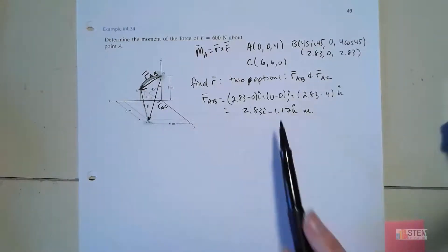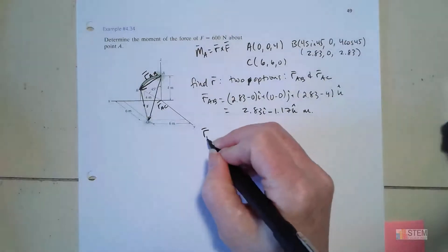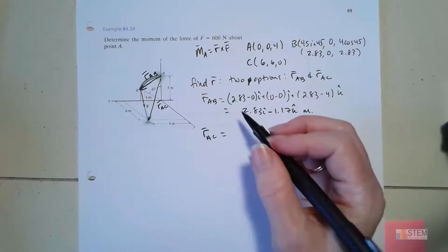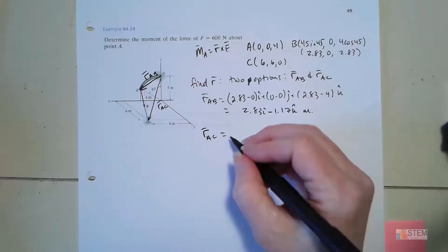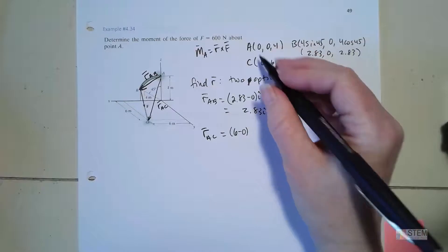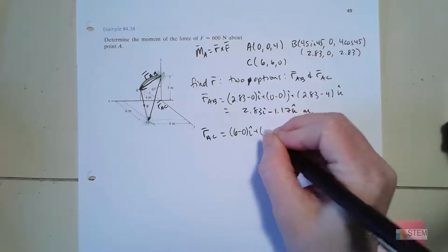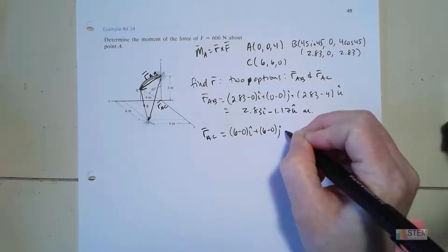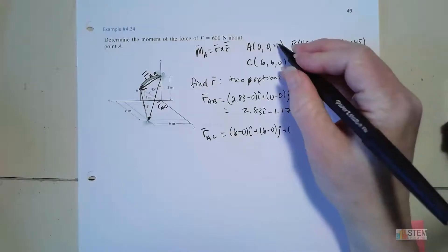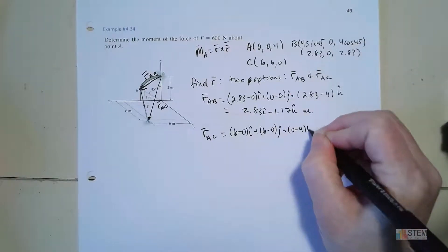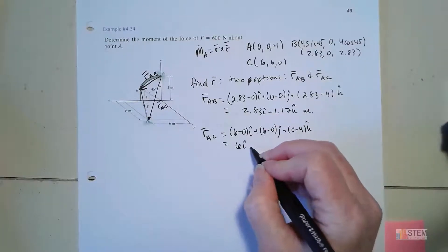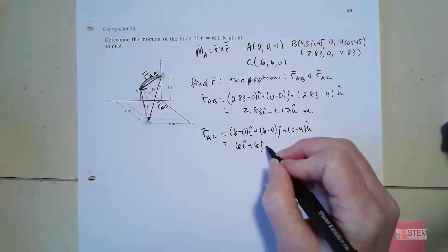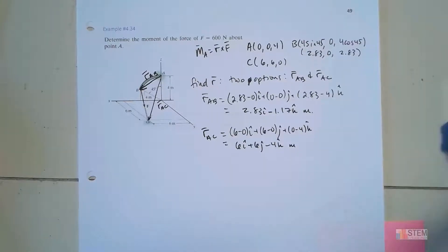Option two is R_AC, pointing to C, so we do C minus A: (6 − 0)I + (6 − 0)J + (0 − 4)K = 6I + 6J − 4K meters. These are your two options for the position vector. Looking at them, I'd prefer to use the top one (R_AB) because it has fewer components and will probably take less time to calculate the moment — but you could use either one and get the same answer.